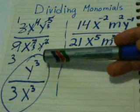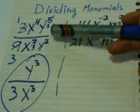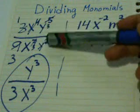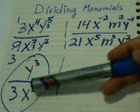Remember when we divide monomials, we subtract exponents. So the answer is y^3 over 3x^3.